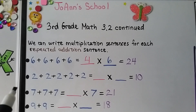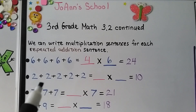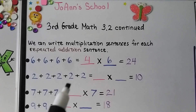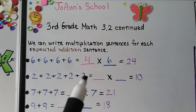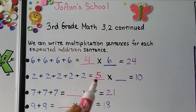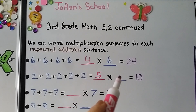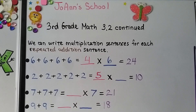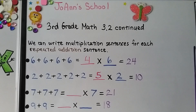Here we have one, two, three, four, five twos — that means we have five groups of two, with two in each group. Five times two is equal to ten.